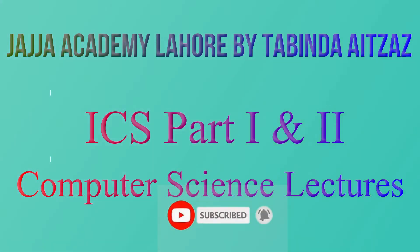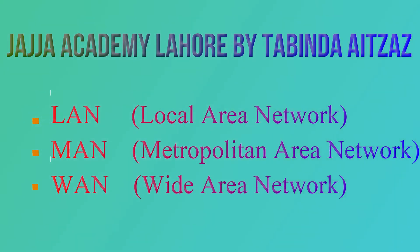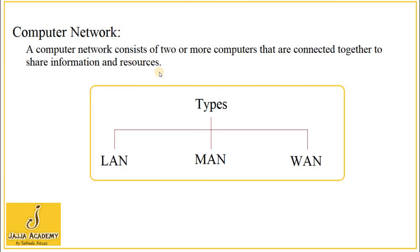Welcome to this lecture. In our previous lectures, we discussed that if we connect two or more computers together in such a way that they are able to communicate with each other — and communication means exchanging data between computers — then this connectivity is called a computer network. The formal definition: a computer network consists of two or more computers connected together to share information and resources.